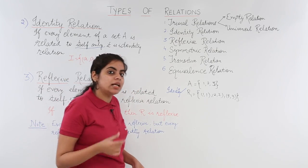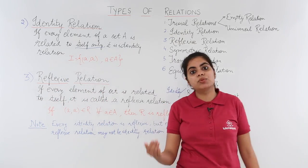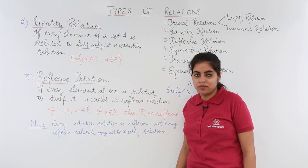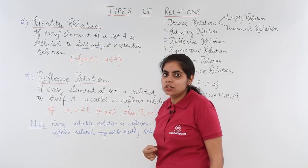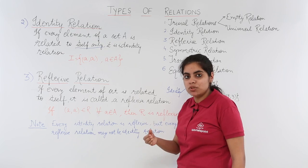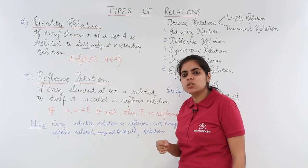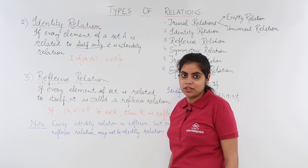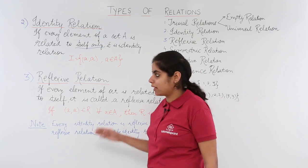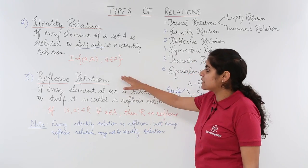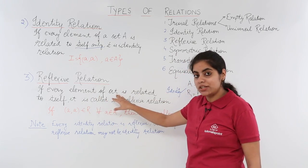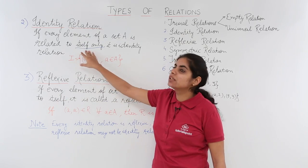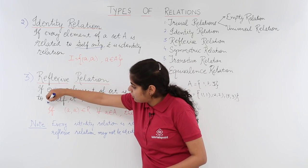Now, after understanding what identity relation is, let's move on to the second part of this video: reflexive relation. This relation is actually a bit confused by students with identity relation. But there is only a minute difference. Let's read out the definition together. Notice: in identity relation it says 'itself only,' while in reflexive relation it says just 'itself.'